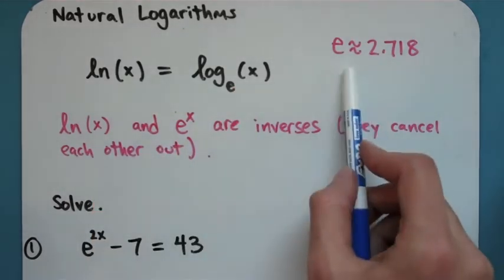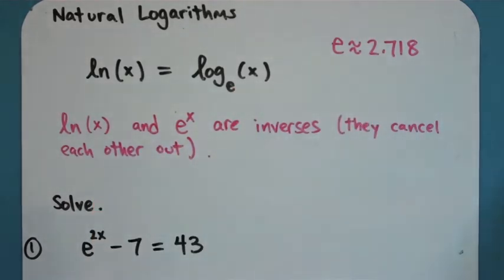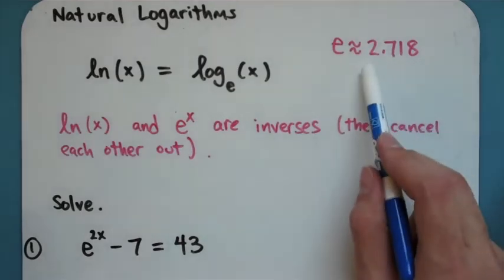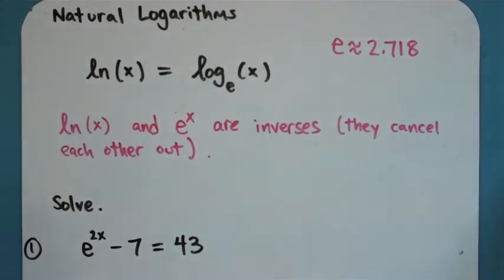Remembering that e is that number I introduced in the continuously compounded interest formula equal to about 2.718, an irrational number that if you go on to more advanced math classes you will definitely use e quite a bit.